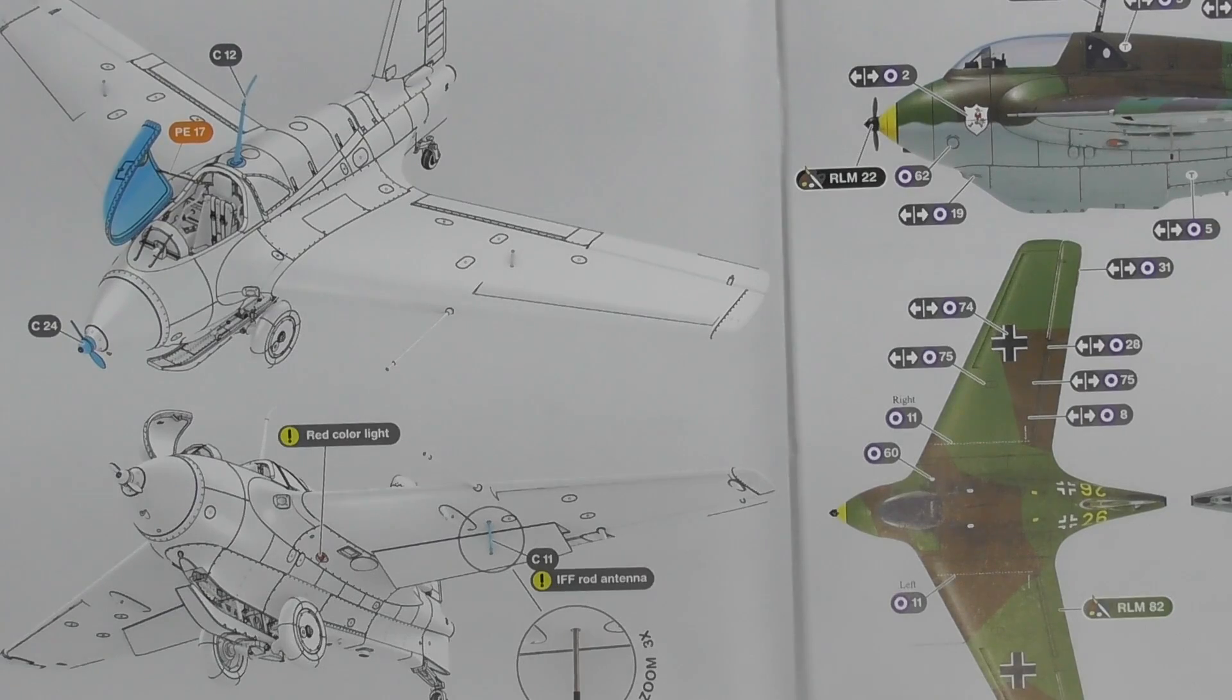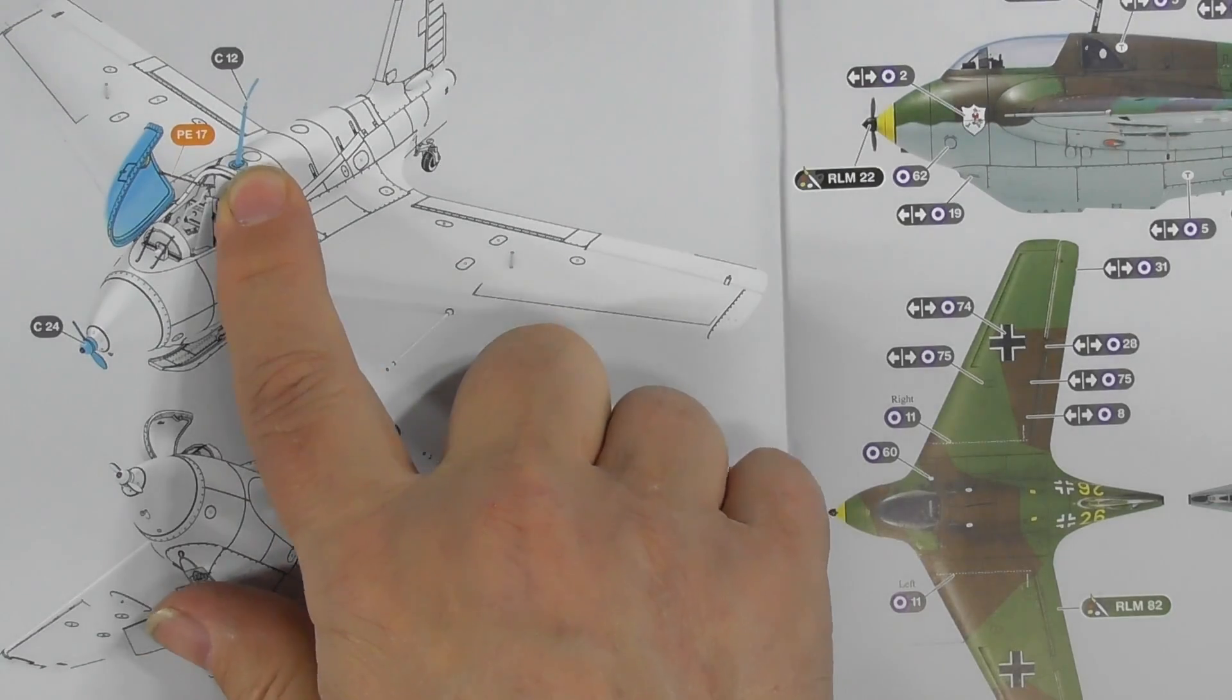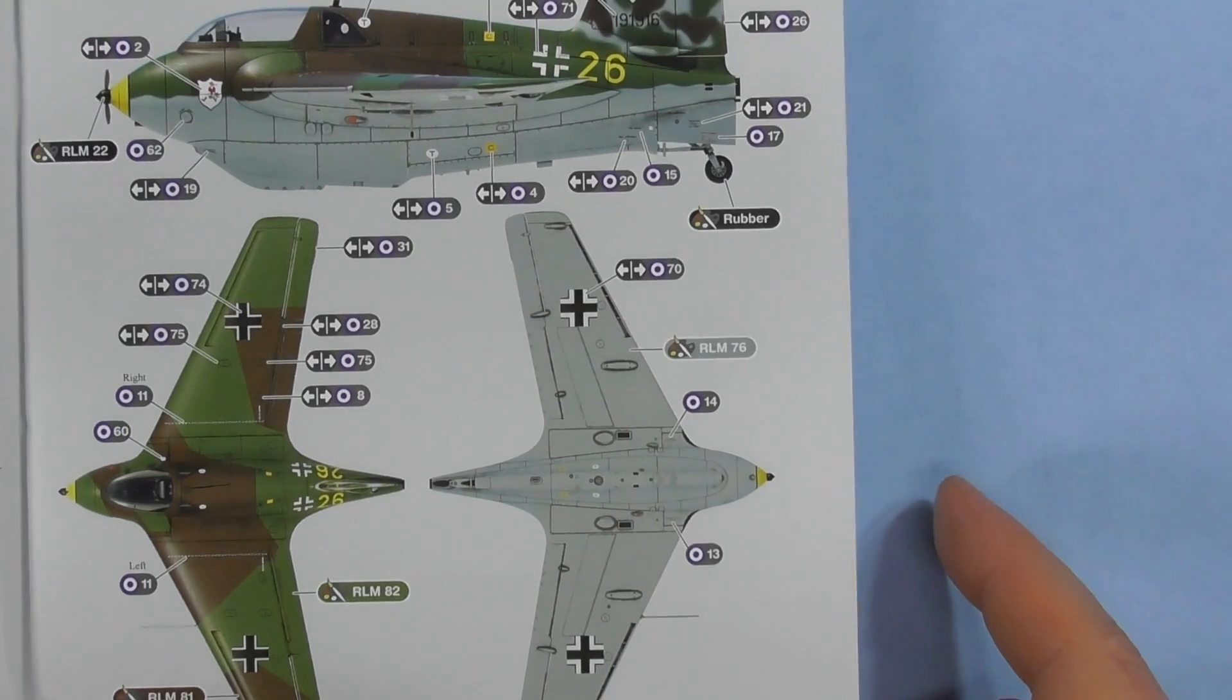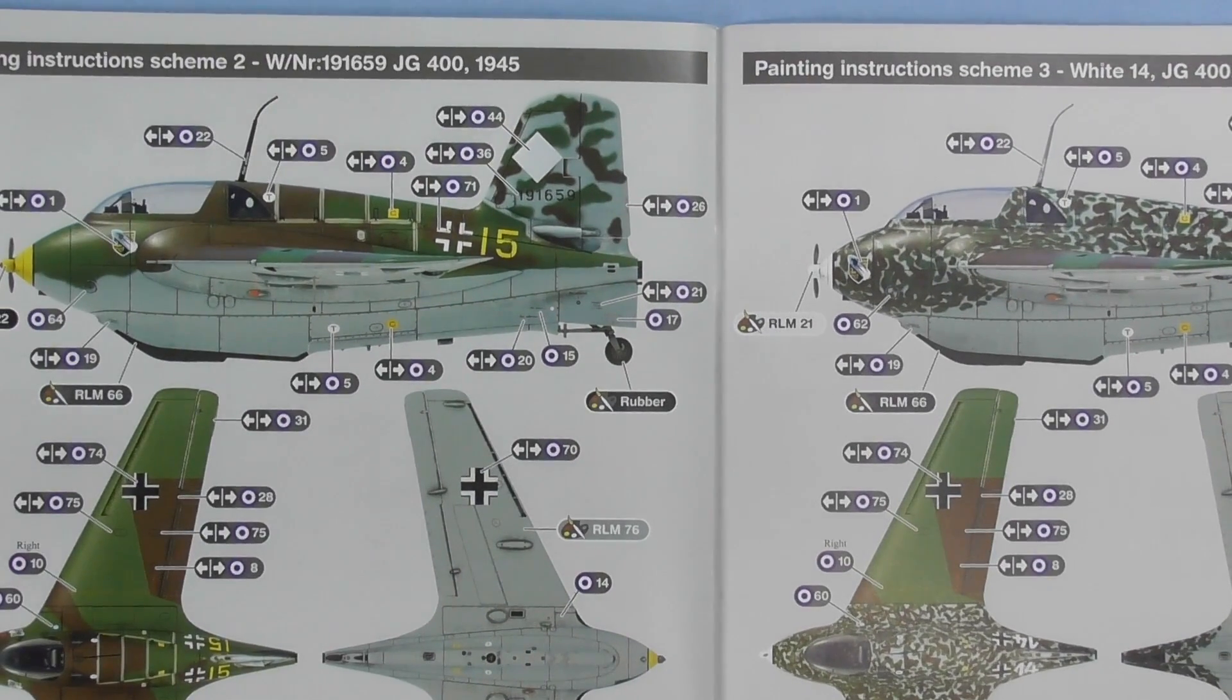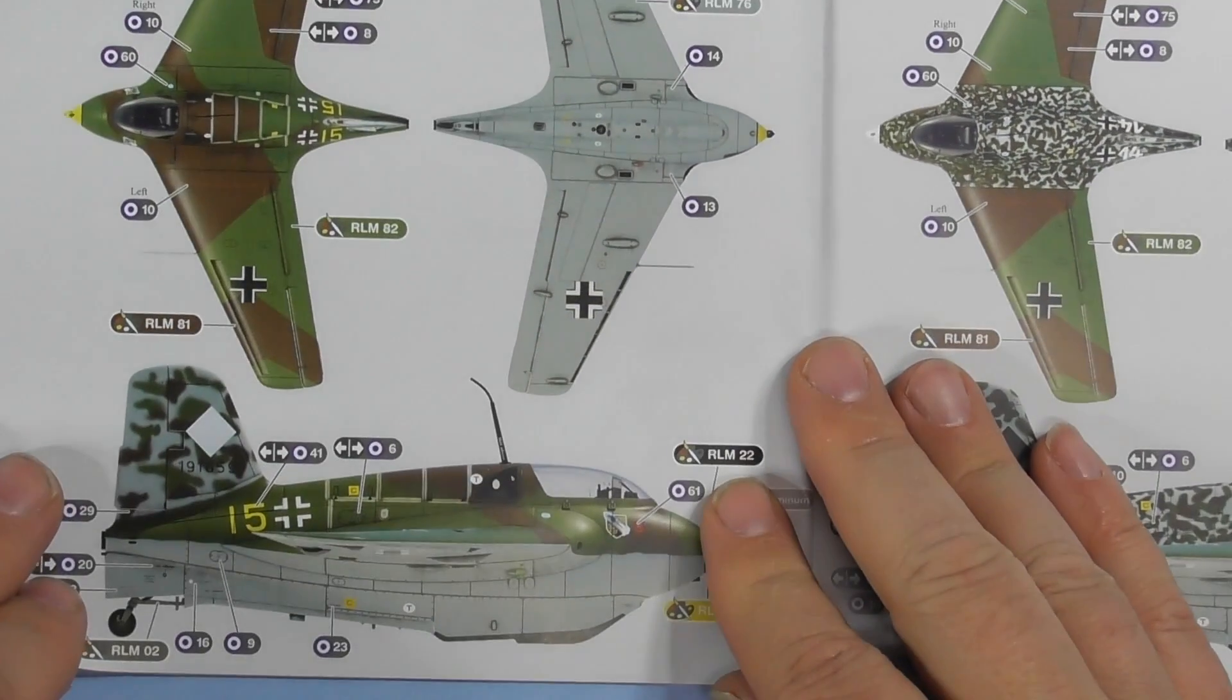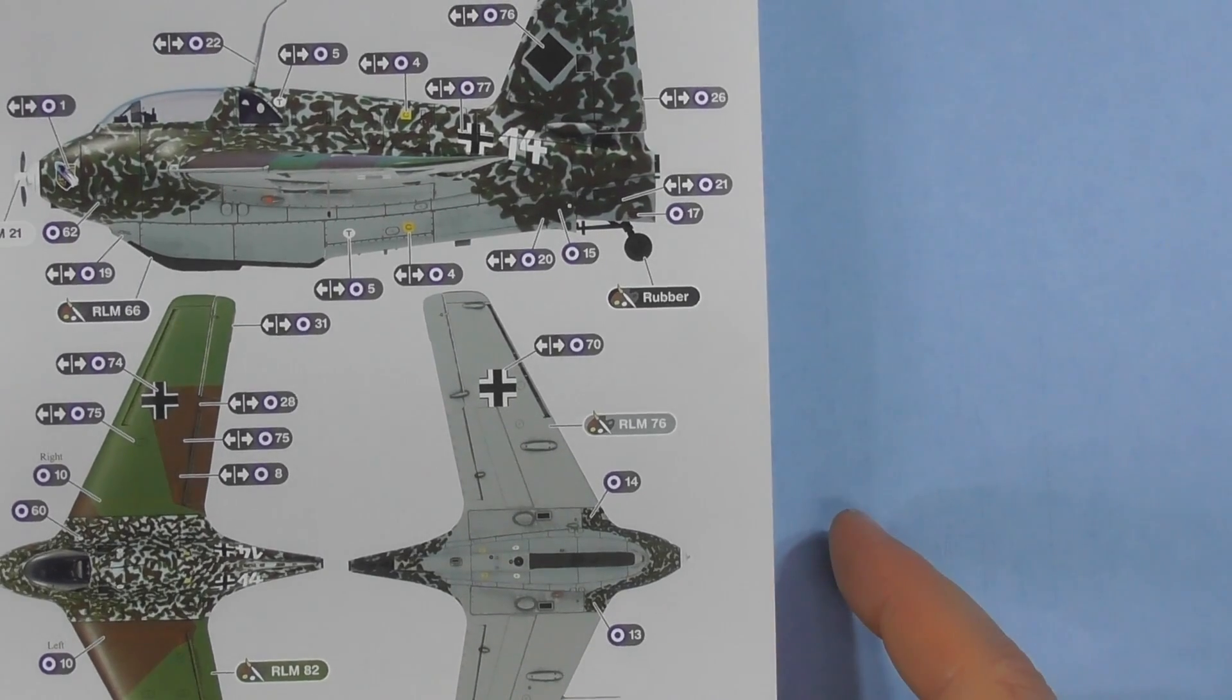Canopy closed, canopy open. Green color light IFF rod - definitely after painting. Scheme one, April 1945. Scheme two, sometime in 1945. Scheme three, February 1945, Brandeis - whatever Brandeis is.